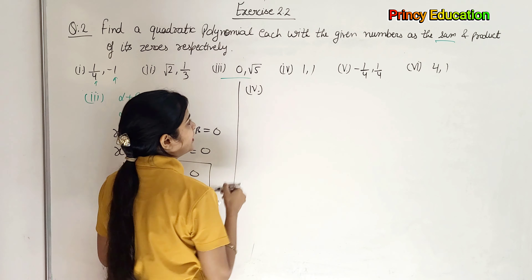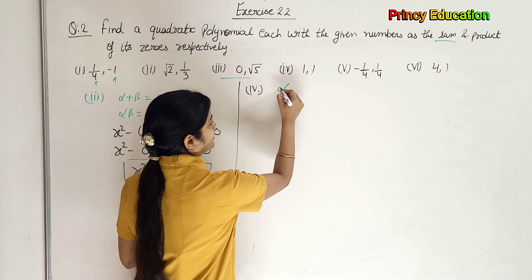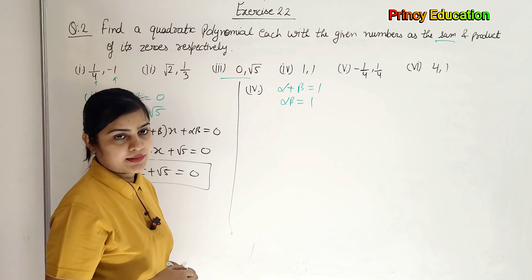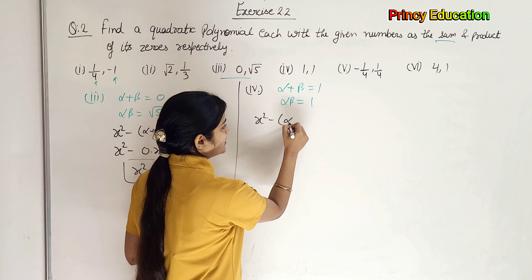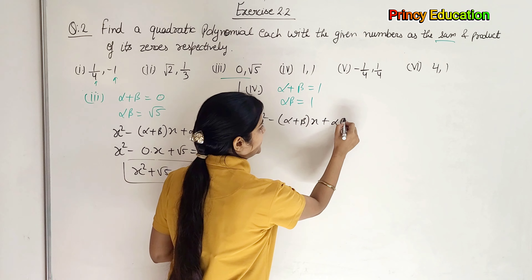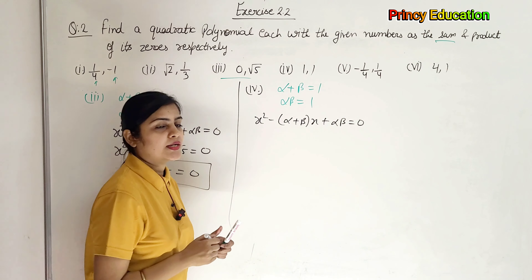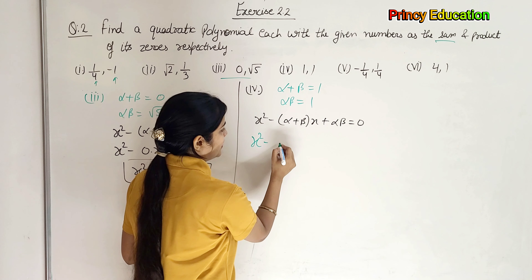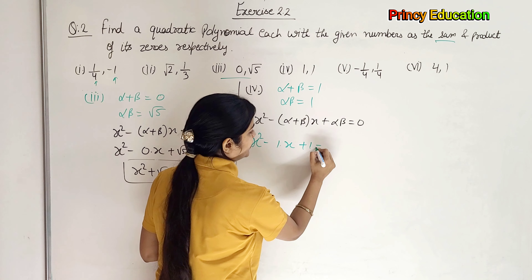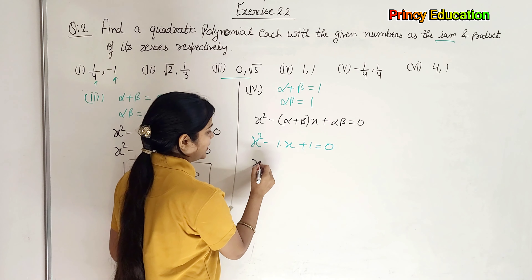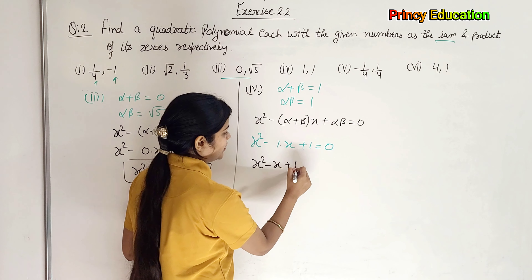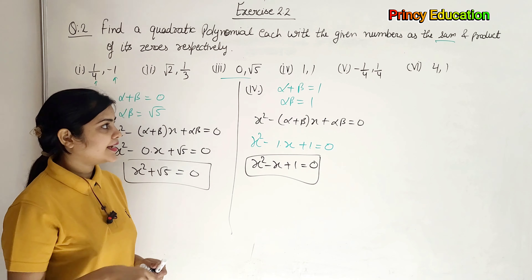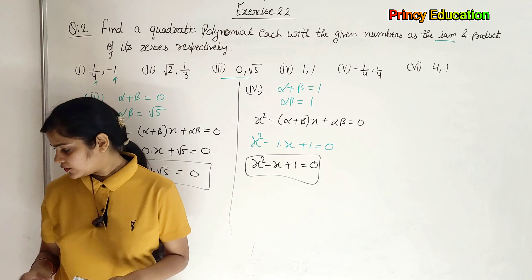Part 4: here we have alpha plus beta equal to 1, and alpha times beta equal to 1. So our equation is x squared minus (alpha plus beta)x plus alpha beta equals zero, which gives x squared minus 1 times x plus 1 equals zero. That means x squared minus x plus 1 equals zero. We have solved all 6 parts here.